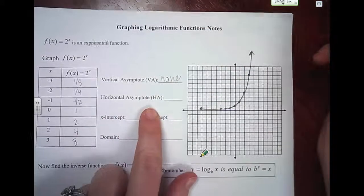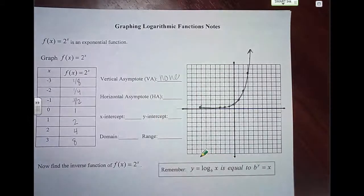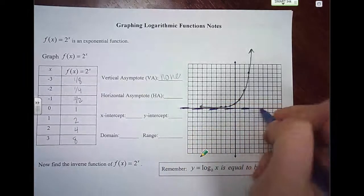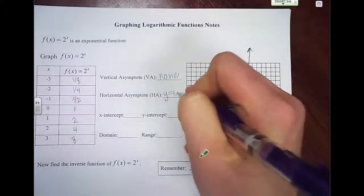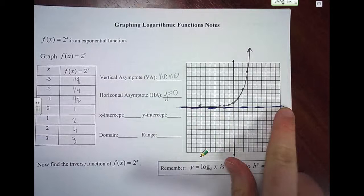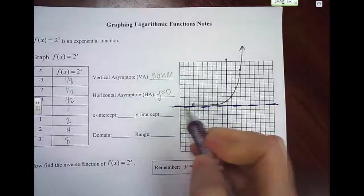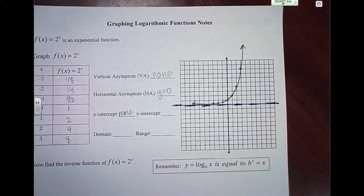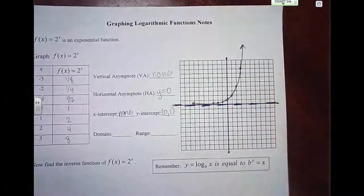But it does have a horizontal asymptote. It's never ever going to pass this line right here, so if I draw that in as a dashed line — we've talked about asymptotes before — we've got a horizontal asymptote at y equals 0. It's going to stay above this line and never pass it. It has no x-intercept since the horizontal asymptote prevents it from crossing the x-axis. But the y-intercept, where it crosses the y-axis, is the coordinate point (0, 1).